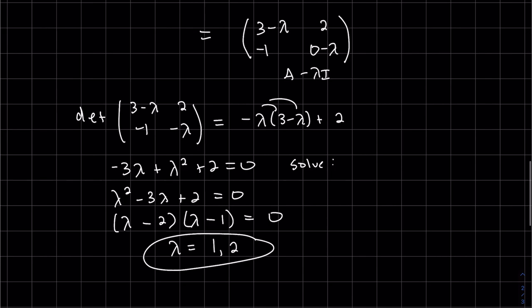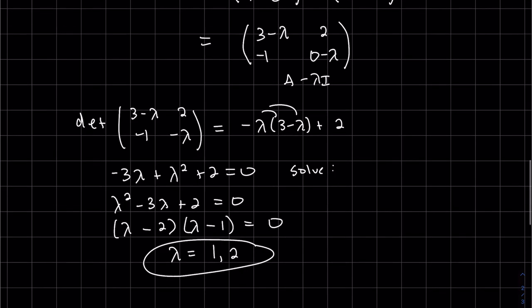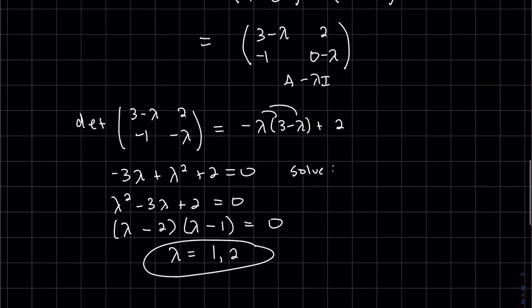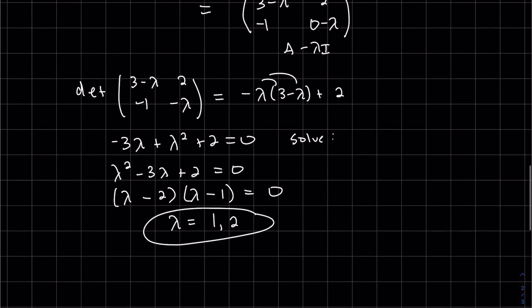Let's go ahead and find the determinant of that. Find the determinant. Set it equal to zero. And then solve. So notice we had a two by two and we did get two eigenvalues.